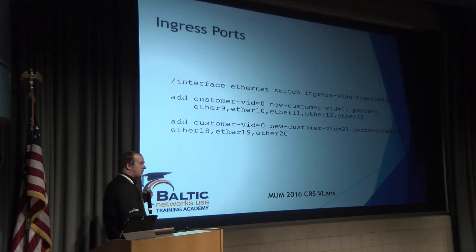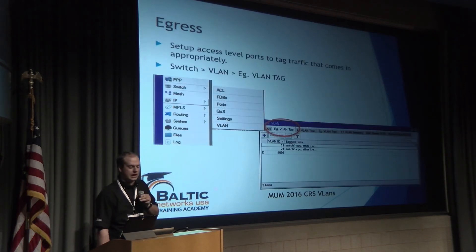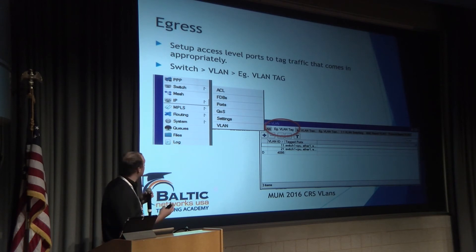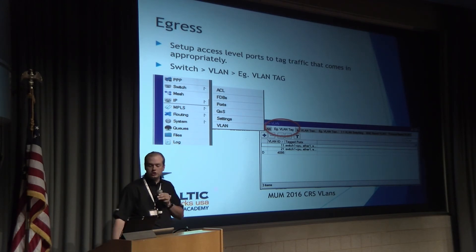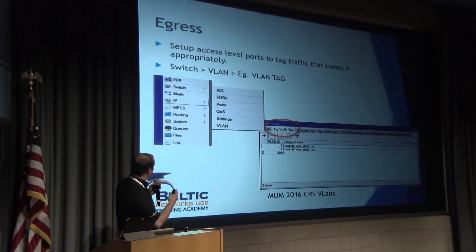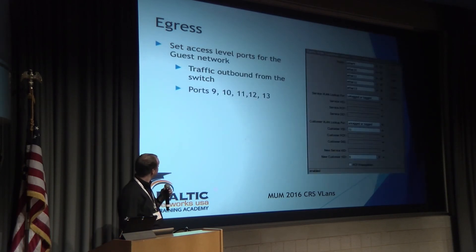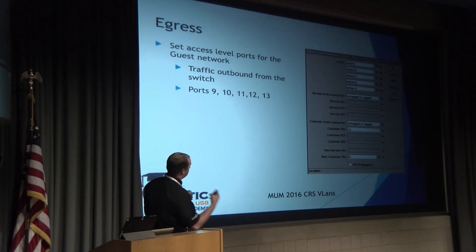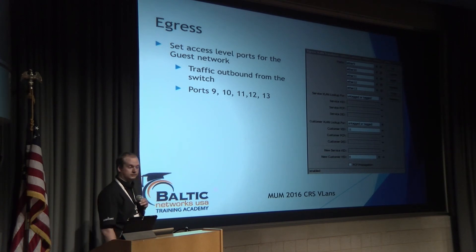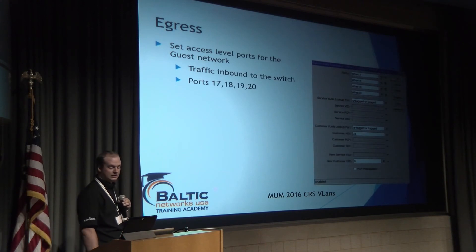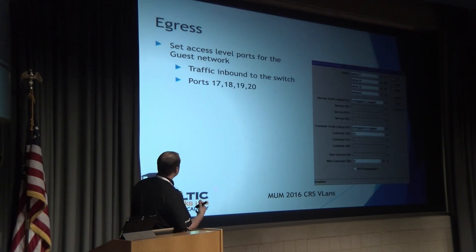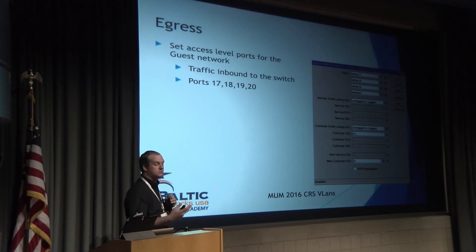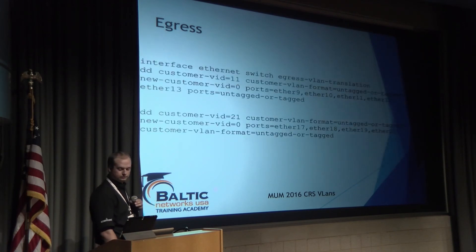The switch also needs to know what ports to strip the VLAN tags off on egress. Go into VLAN settings and Egress VLAN Tag. For ports 9 through 13, if a packet has tag 11, strip it off and send it out with no tag (tag 0). The same applies to guest network access ports — tag 21 is stripped off as it leaves ports 17 through 20. Here's the command line equivalent for that configuration.